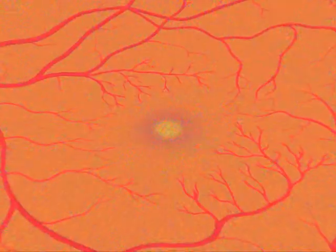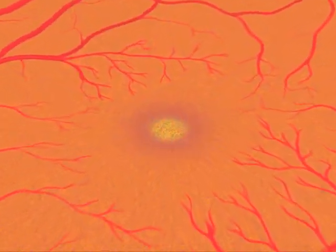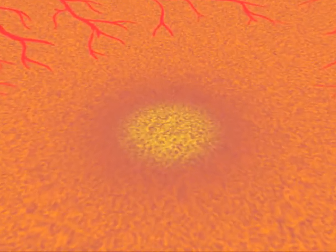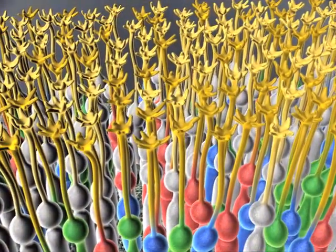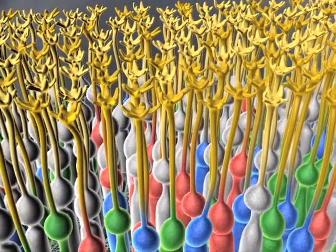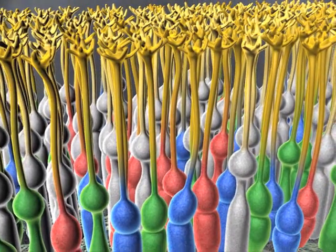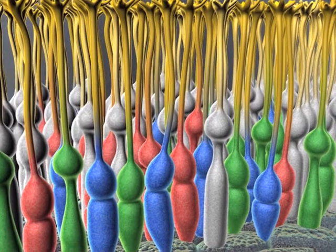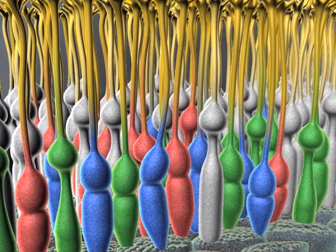This central area is called the macula, or sometimes the macula lutea, or yellow spot. It appears yellow due to high concentrations of the pigments lutein and zeaxanthin in the axons of rods and cones. These are thought to help filter out short wavelengths, blue and ultraviolet light, protecting the photoreceptors rather like sunglasses.